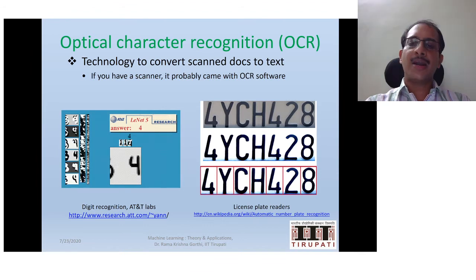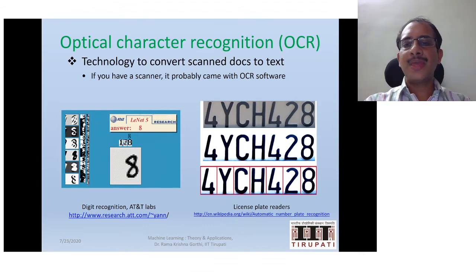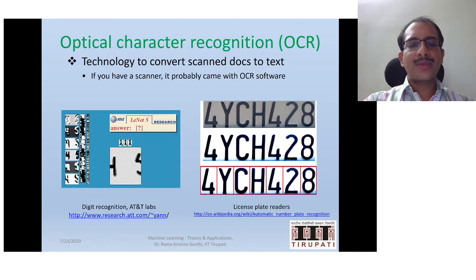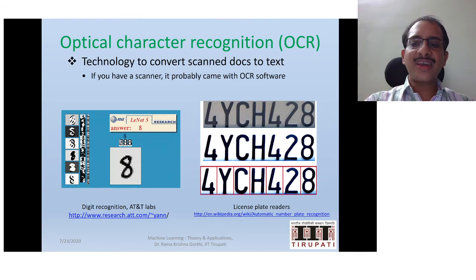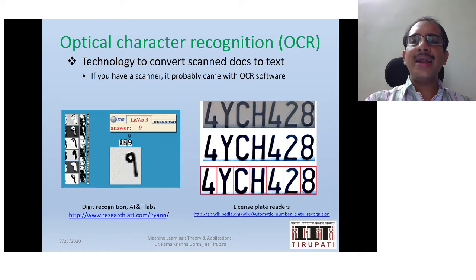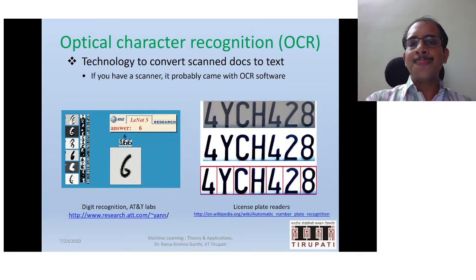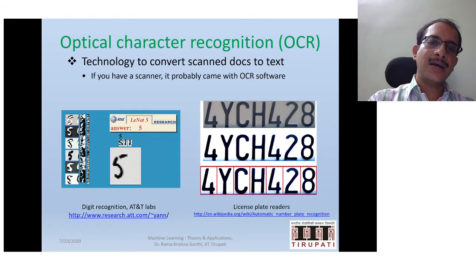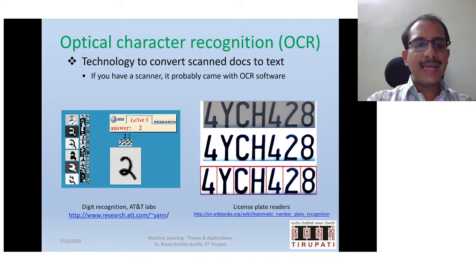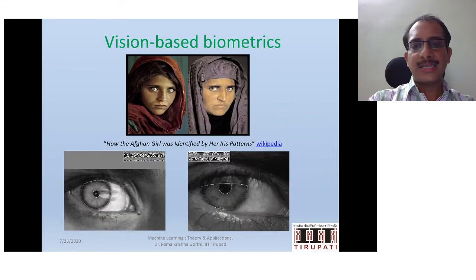Machine learning has played a great role in several applications. One such application is digit recognition and character recognition — it automatically recognizes digits, for example pin code numbers, and routes them to the correct area. This can also be useful in understanding number plates and license plates of vehicles and cars.